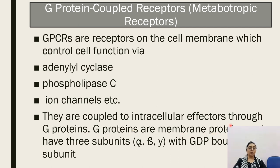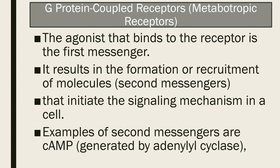G proteins are membrane proteins with 3 subunits: alpha, beta, and gamma, with a G protein-bound subunit. The agonists that bind to the receptor are the first messengers, such as alpha and beta receptors. They first bind to the receptor and consequently stimulate internal second messengers, resulting in the formation of signaling molecules. Examples of second messengers are cyclic AMP, inositol triphosphate, and diacylglycerol.